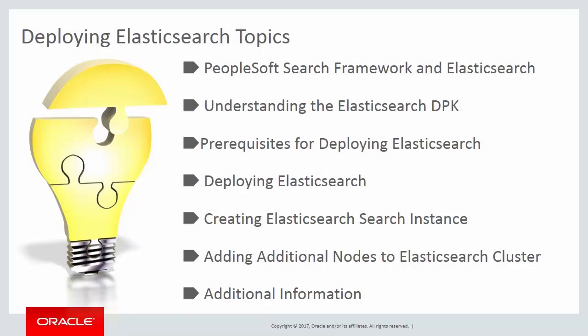In this Spotlight series, we'll cover the following topics. In the first topic, PeopleSoft Search Framework and Elasticsearch, we'll briefly discuss the PeopleSoft Search Framework and the Elasticsearch search engine, and the deployment options. PeopleSoft Deployment Packages, or DPKs, were introduced in PeopleTools 8.55 and are used to deploy Elasticsearch. In the Understanding Elasticsearch DPK topic, we'll describe how to obtain the Elasticsearch DPK and describe some of the software components it contains.